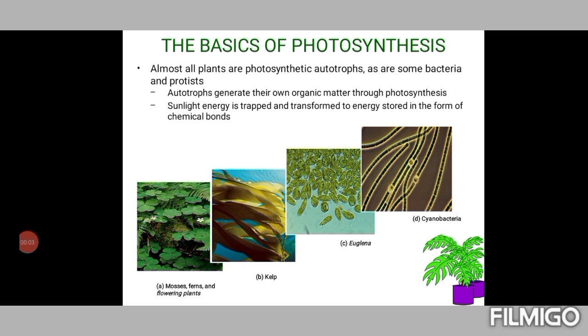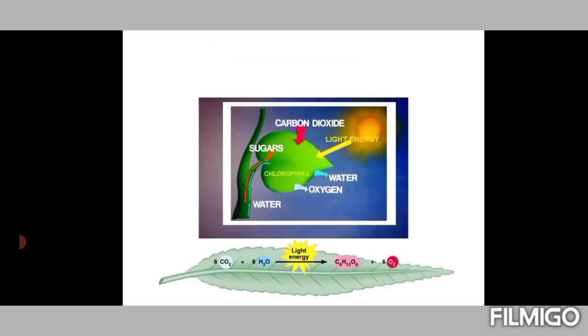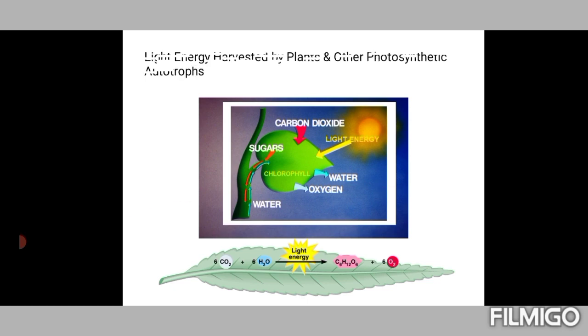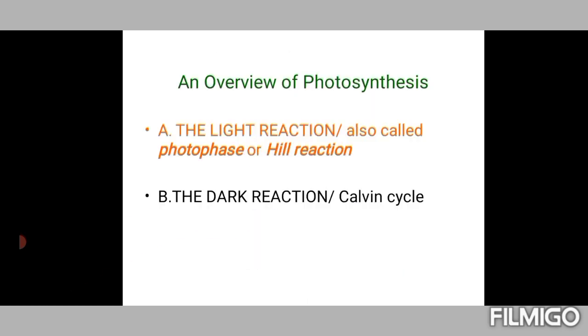We start with discussion of some basic aspects of photosynthesis. Photosynthetic autotrophs include cyanobacteria, Euglena, kelp, mosses, ferns, and higher plants. All these autotrophs are capable of synthesizing sucrose or starch using carbon dioxide, light, and water, with production of oxygen as a by-product and with the help of chlorophyll.